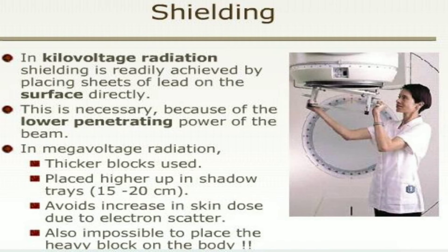In kilovoltage radiation, shielding is rarely achieved by placing seeds of lead on the surface directly. In megavoltage radiation, thicker blocks are placed higher up in a shadow tray 15 to 20 cm, always resulting in an increase in skin dose due to electron scatter, and it is also impossible to place heavy blocks on the body.